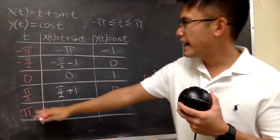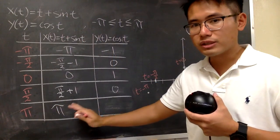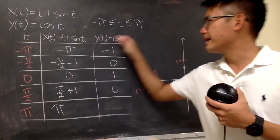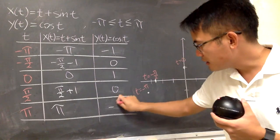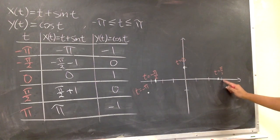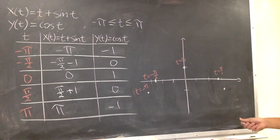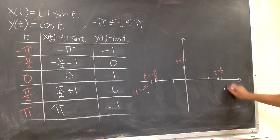And lastly, pi in here, you get pi, and then sine of pi is 0, so you just have pi. And then pi in here, cosine of pi is negative 1. Here is my 3. This is my 3.14-ish, and you go down to negative 1, which is about right here. Indicate this is when t equals positive pi.